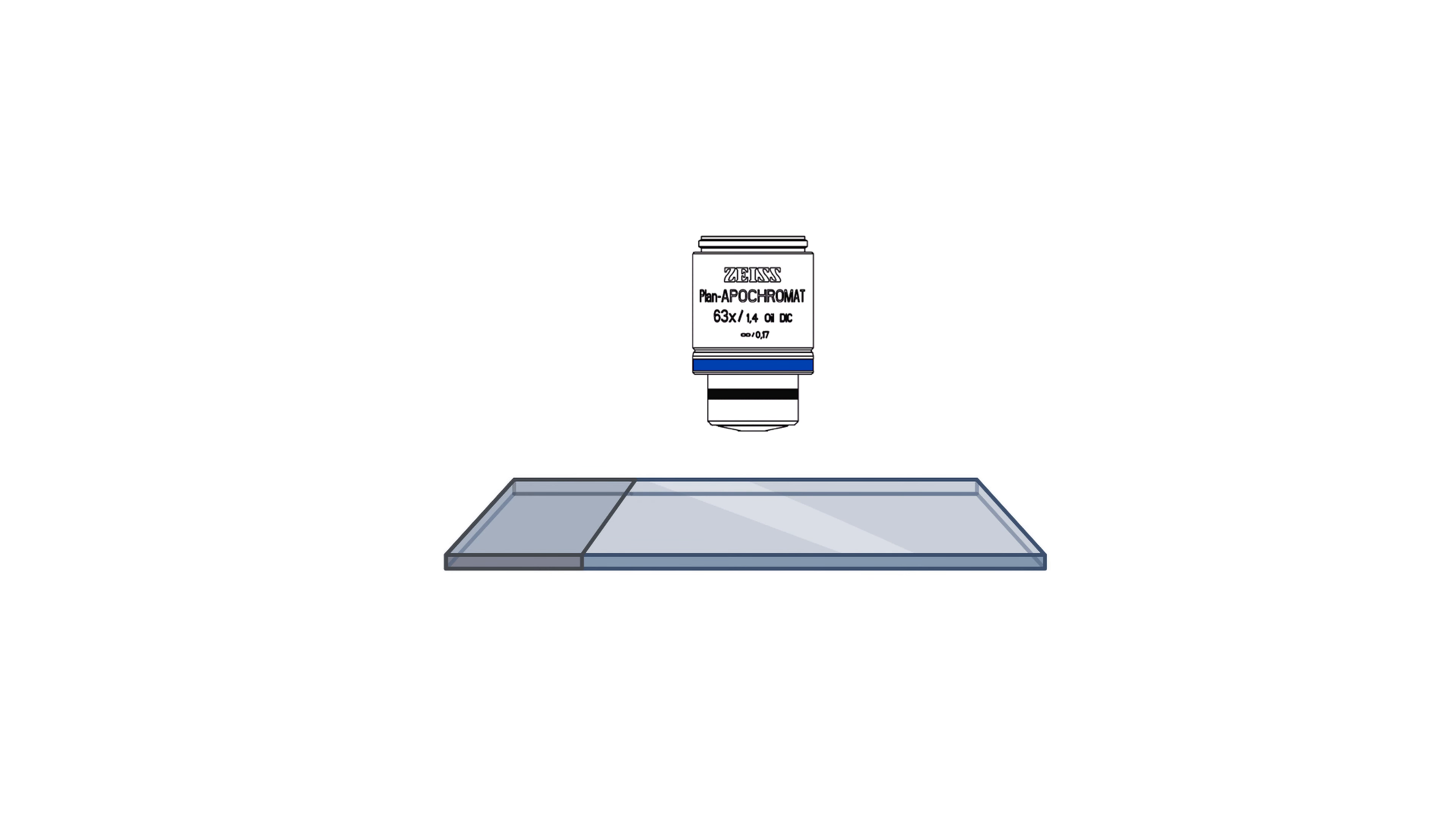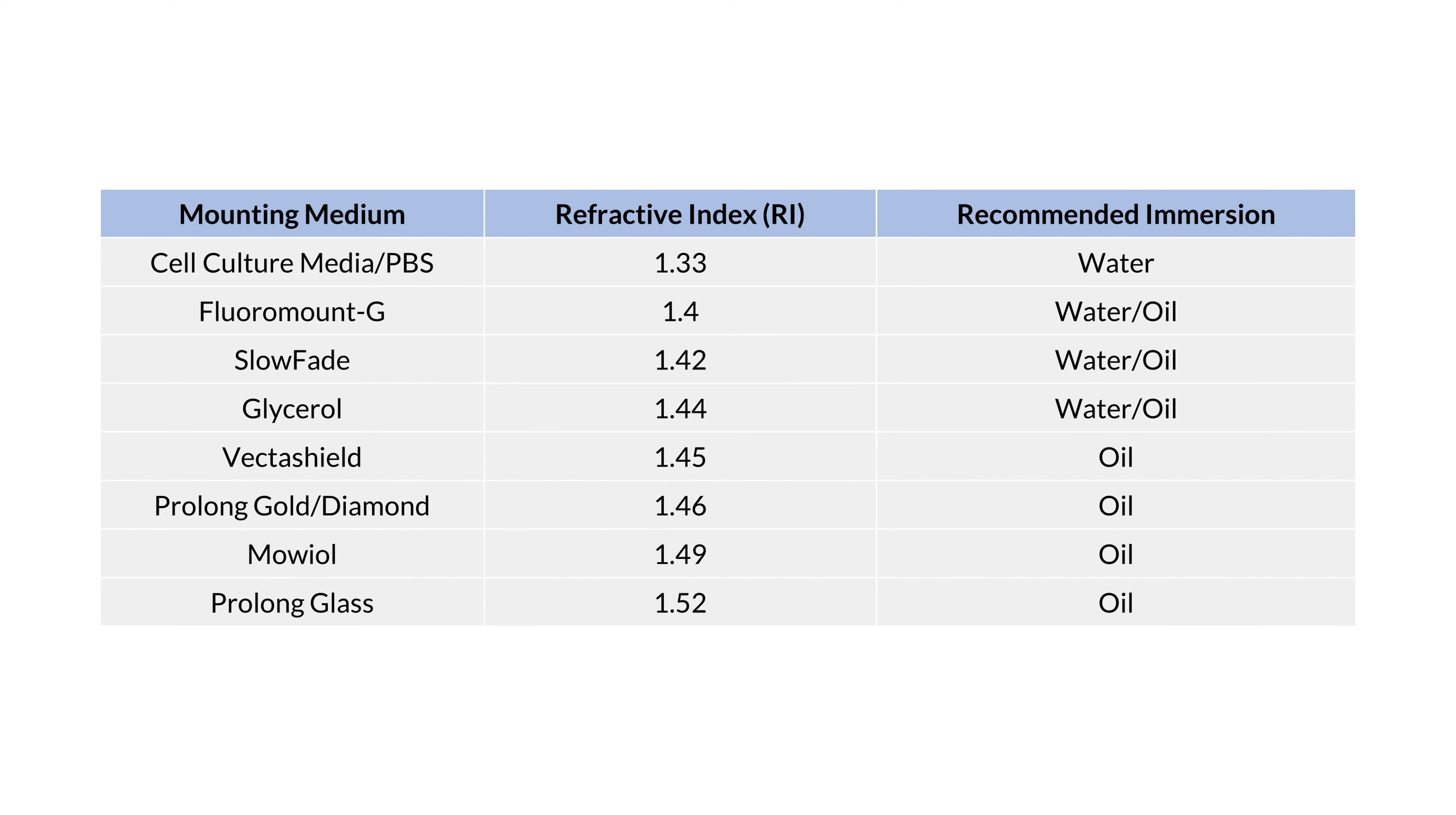If you have tissue sections that are mounted in prolonged glass, for example, which has a cured refractive index of 1.52, an oil immersion objective would be the best choice. Here is a list of a few common mounting mediums and their refractive indices along with respective immersion fluid recommendations. You can see that many of these mounting solutions have refractive indices somewhere between oil and water. So we want to choose an objective that comes as close as possible to the refractive index of your mounting medium.